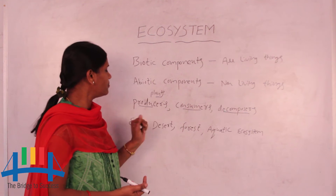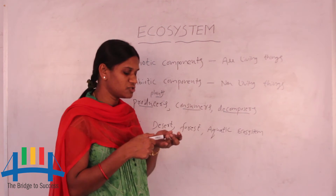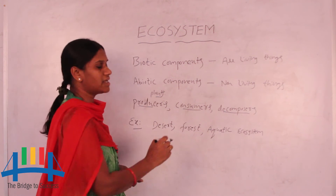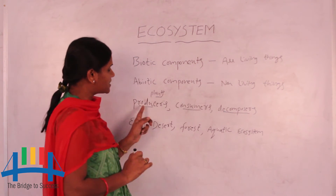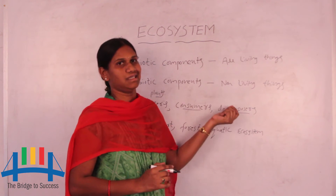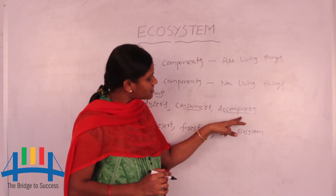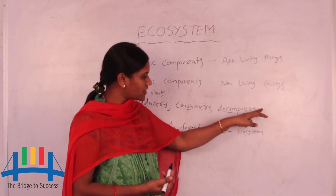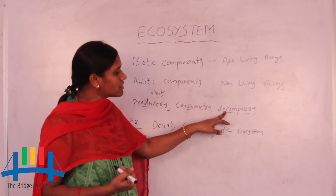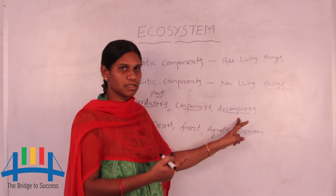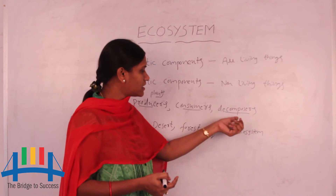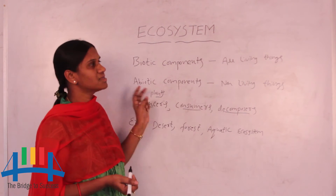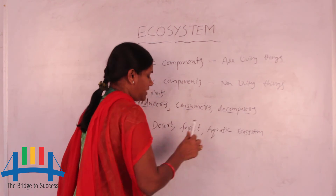Consumers are those that depend on producers — all animals come under consumers. Then decomposers: examples are bacteria and fungi. These organisms carry out decomposing. So decomposing is done by decomposers. Producers and consumers are all finally involved in that decomposing process.